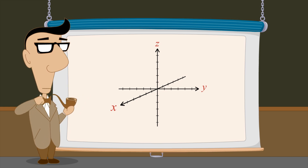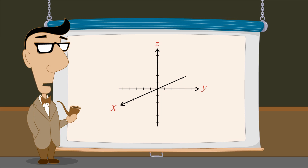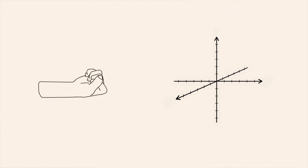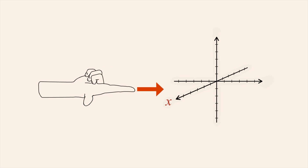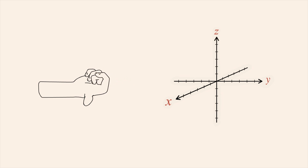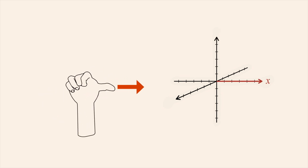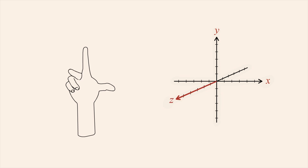The three axes can be oriented in any way as long as all three axes are perpendicular to each other and they conform to what is called the right-hand rule. The right-hand rule states that if you align the thumb of your right hand pointing in the positive direction of the x-axis and your index finger pointing in the positive direction of the y-axis, then your middle finger should point in the positive direction of the z-axis. For example, we could arrange the axes so that the positive x-axis points to the right and positive y points up. In that case, the right-hand rule tells us that positive z must point out of the page.